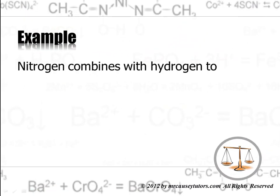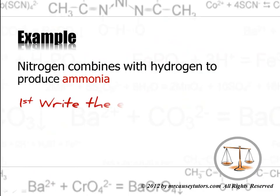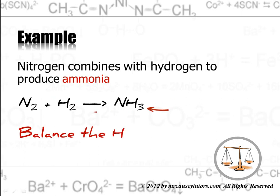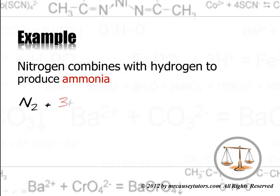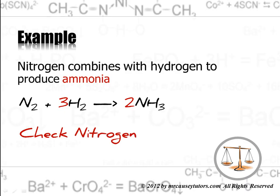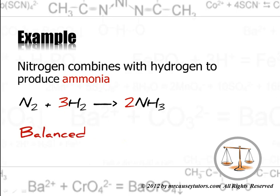Nitrogen combines with hydrogen to produce ammonia. First, let's write an equation: N2 + H2 → NH3. You need to remember that nitrogen and hydrogen are diatomic. Now balance the H's by finding the lowest common multiple of 2 and 3, which is 6. Adjust the coefficients — remember, you can only change the coefficients. Check the nitrogen: N2 equals 2N. That's true, and it's balanced. That's a pretty easy one.